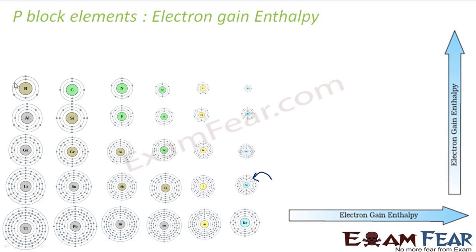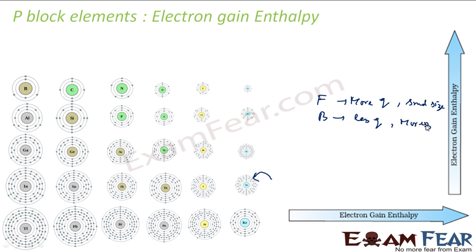If you compare Boron and Fluorine, Boron has less power to attract a new electron as compared to Fluorine. Why? Fluorine has more charge. Now comparing Fluorine and Bromine: Fluorine has more charge and small size, whereas Bromine has less charge and more size. So Fluorine has more capacity to attract electron as compared to Bromine, because it has more charge and more power to attract, and also its size is small.